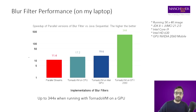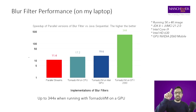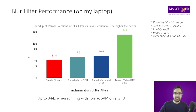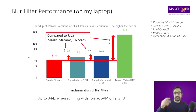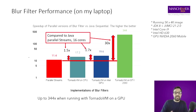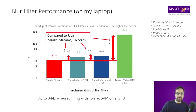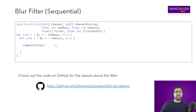The image is 5K by 4K pixels — pretty standard for any camera nowadays. Comparing against the parallel Java streams version, which is what you can get right now in Java, we can get up to 30x faster when running on the GPU.